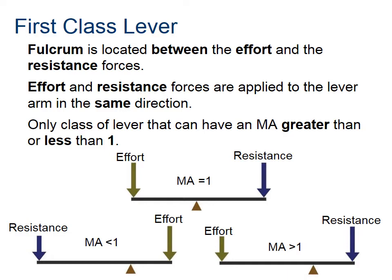The first class lever is pretty unique because it is the only lever that can have a mechanical advantage either greater than, less than, or equal to one. In the top middle example, the effort force and the resistance force are the same, and the fulcrum is right in the middle, so in this case the mechanical advantage equals one.